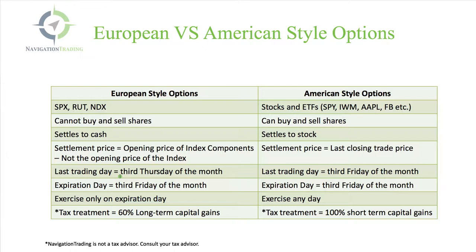The last trading day for European style options is the third Thursday of the month, whereas the last trading day for the American style options is the third Friday of the month. With European style, the expiration day is the third Friday of the month, and with American style, it's also the third Friday of the month. The difference is the last trading day — the third Thursday is the last day you can trade European style options, whereas with American style, you can trade them all the way through the close on the third Friday of that month.